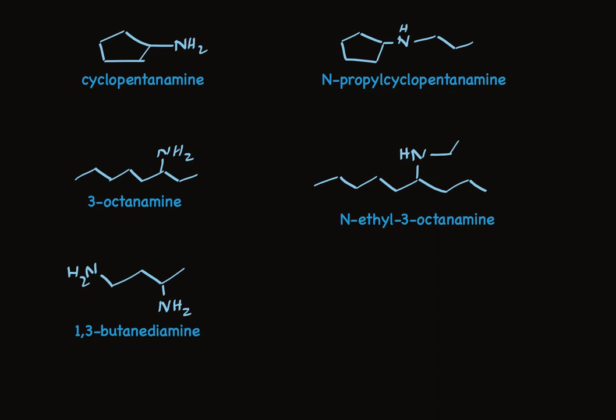Some compounds have two amino groups attached — not a problem. This has a four-carbon chain, so we call it butane, with amino groups at the 1 and 3 carbons, making it 1,3-butanediamine. Notice we did not drop the -e; we just put diamine at the end. And for an aromatic compound, we'd do the same kind of thing — this is 1,3-diaminobenzene.